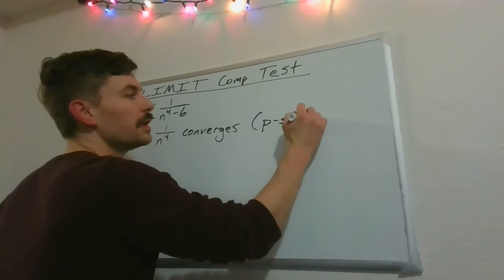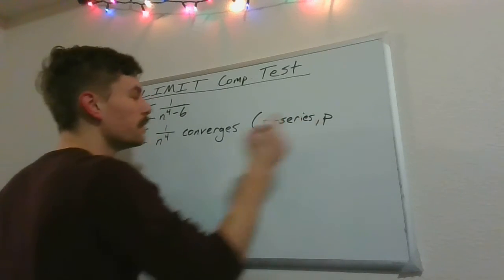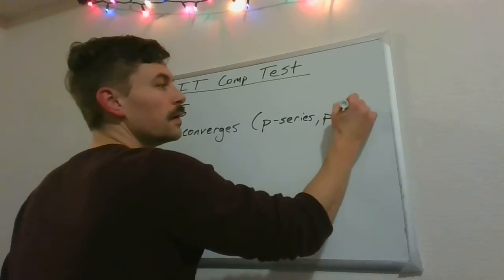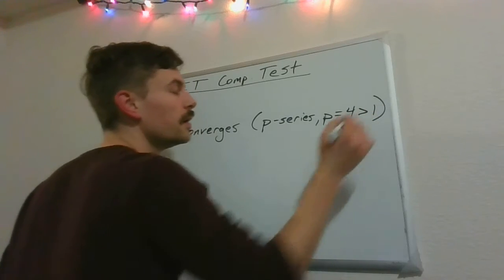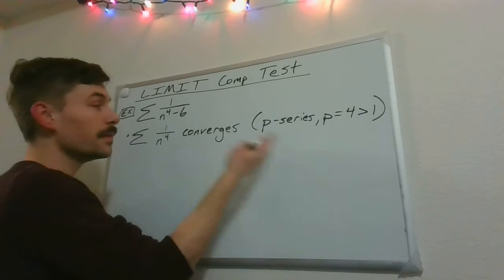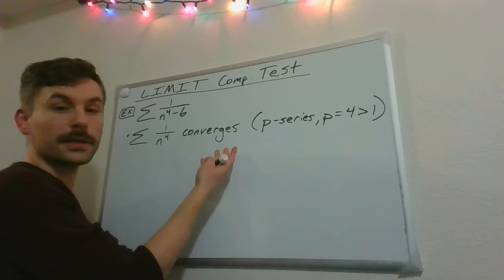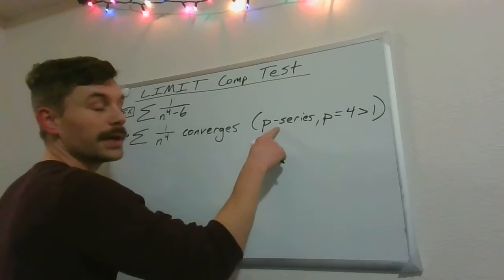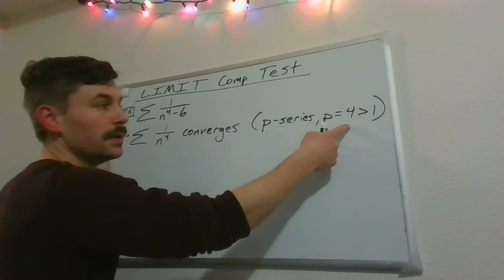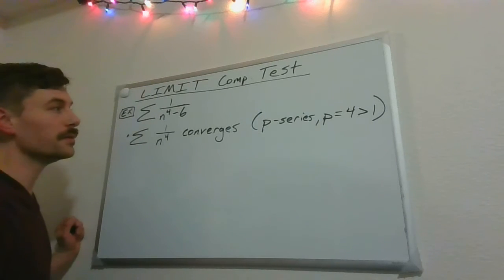And the reason we know that is because p is 4, and that's greater than 1. Always a good reminder to say how come this thing does converge. If I'm going to make a claim like that, we verify it, calling out what type it is and also what the actual p-value is.